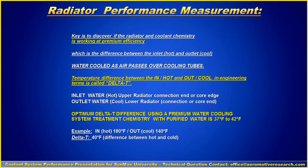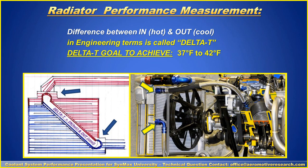The key is to discover if the radiator and coolant system chemistry is working at premium efficiency, which is the difference between the inlet and the outlet. Water is cooled as air passes over the cooling tubes. The temperature difference between the inlet and the outlet — in engineering terms — is called delta T. Delta means difference, T means temperature: the inlet where it's hot coming in and the outlet where it's cool going out. What you want to try to achieve is about 37 to 42 degrees, or close to the 40 degree mark. If you don't have a 40 degree delta T, you are not at complete efficiency.